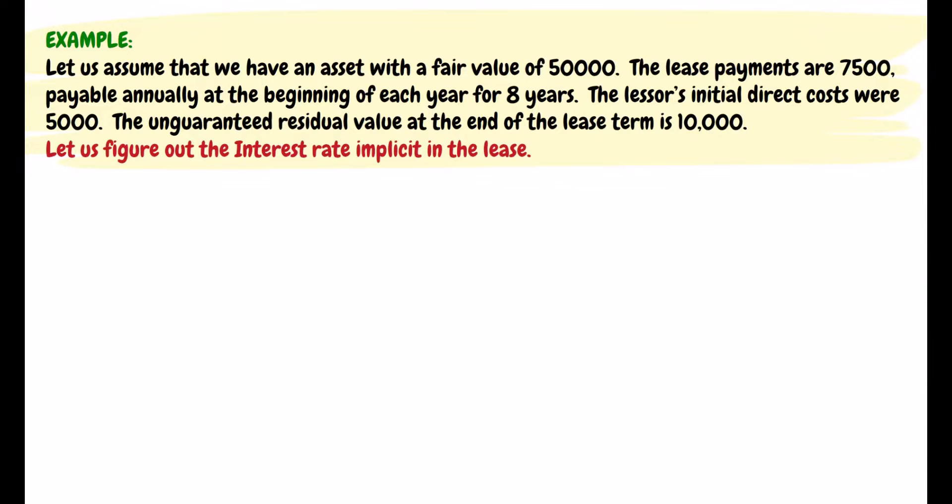Let us assume that we have an asset with a fair value of 50,000. The lease payments are 7,500, payable annually at the beginning of each year for eight years. The lessor's initial direct costs were 5,000. The unguaranteed residual value at the end of the lease term is 10,000. Let us figure out the interest rate implicit in the lease.